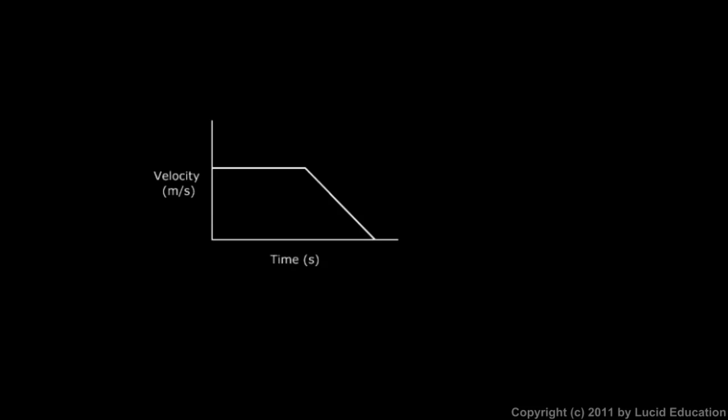This graph is a graph of the velocity of an object and how that velocity changes over time. And we notice that at the beginning, in this earlier time, there's one thing on the graph. And then in this later time, there's another segment of the graph. So let's look at each of those.